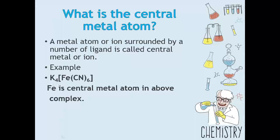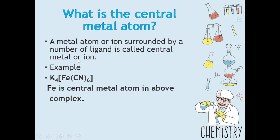A central metal atom is a metal atom or ion surrounded by a number of ligands. For example, iron has 6 ligands within the coordination sphere. Iron is the central metal atom in this complex.